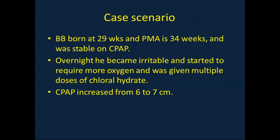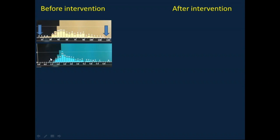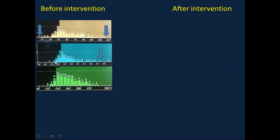Here is a case scenario to show the value of evaluating histograms daily. A baby boy born at 29 weeks, post-menstrual age 34 weeks, was stable on CPAP. Overnight he became irritable and required more oxygen. He was given multiple doses of chloral hydrate for irritability, and CPAP was increased from 6 to 7. In the morning, histograms showed a very wide-base respiratory rate histogram — the infant was cycling between very low respiratory rates and tachypnea up to 120 per minute — along with a very wide-base perfusion index exceeding the upper expected normal limit.